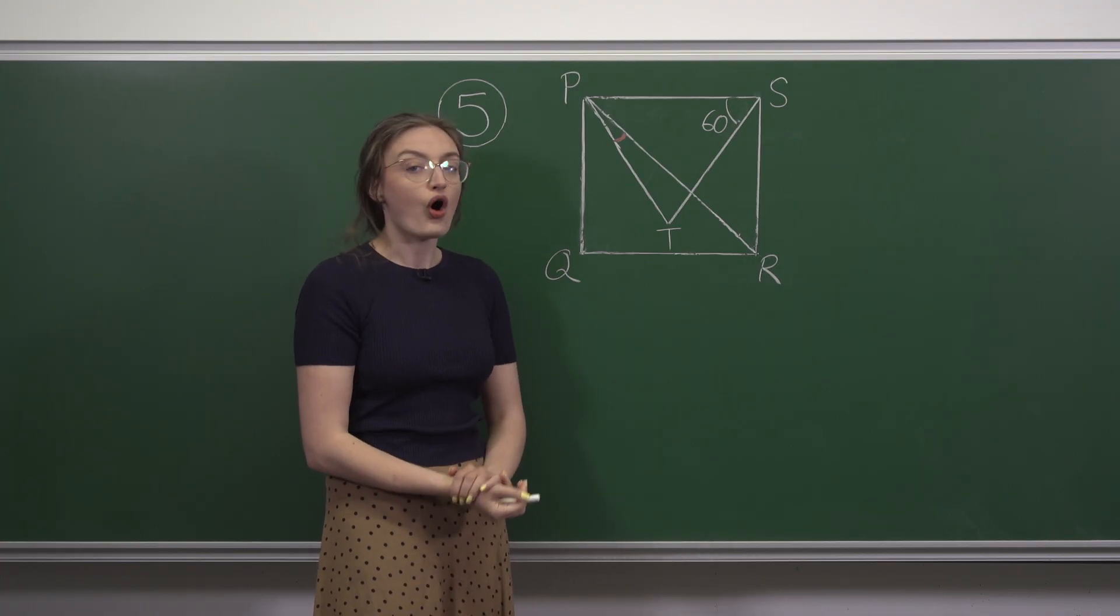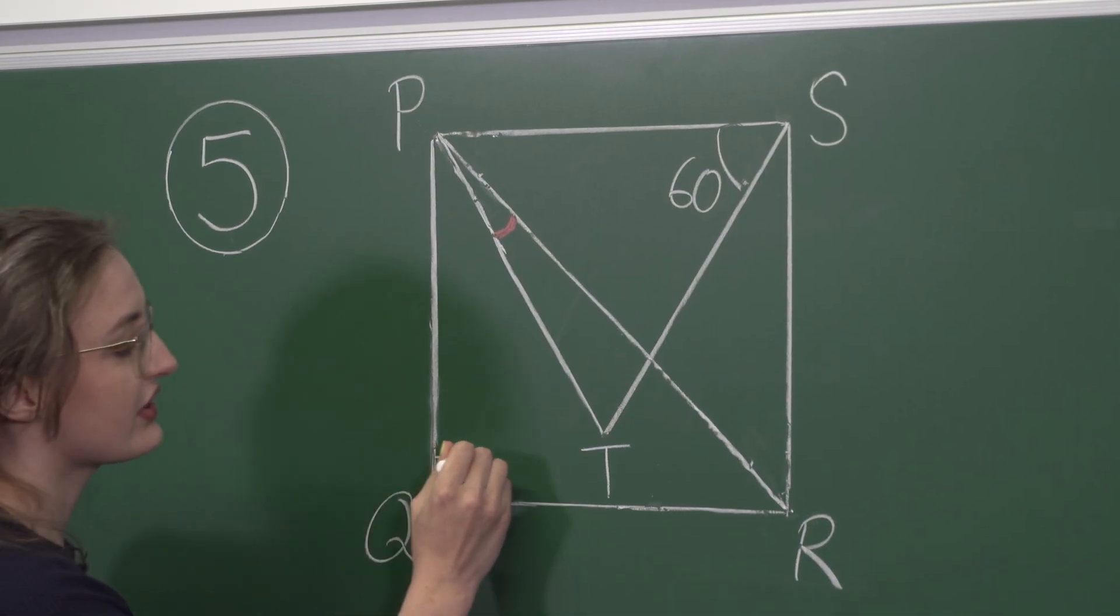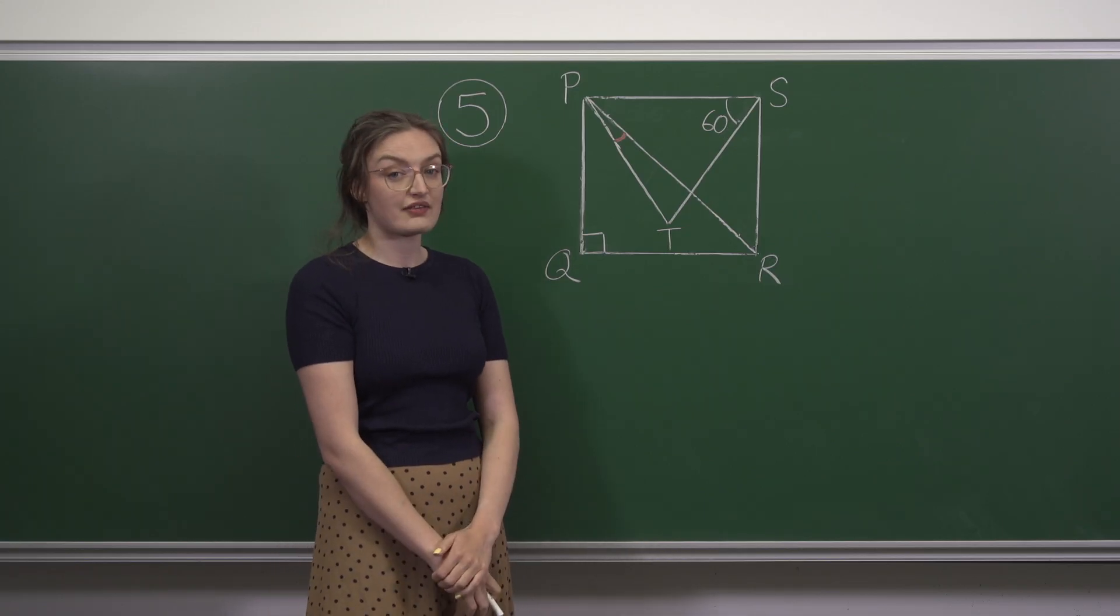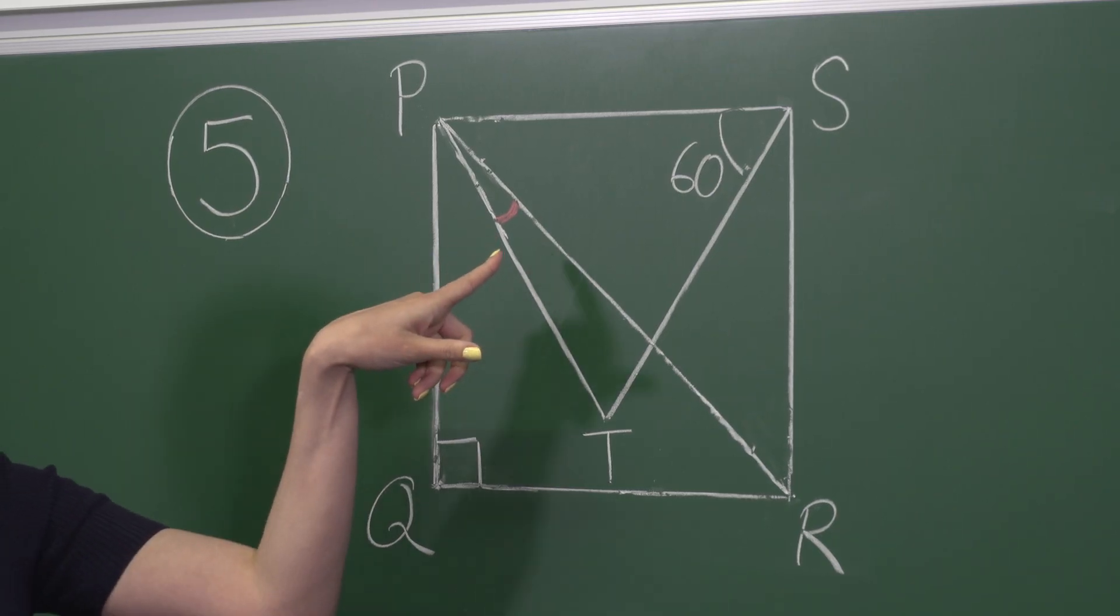In a square, all of the corners are at right angles, or 90 degrees. Now that we have our facts, let's see how we can use them to find this angle marked on in red.